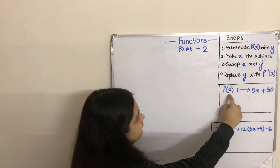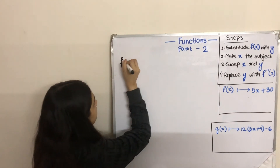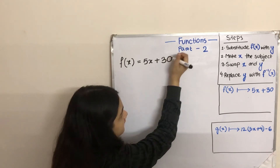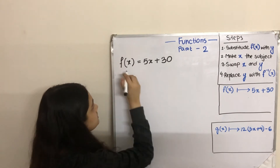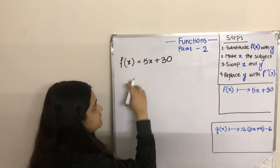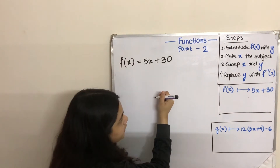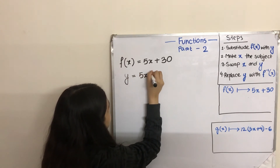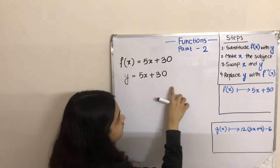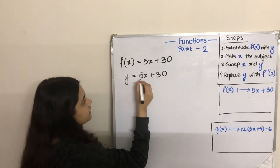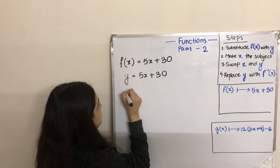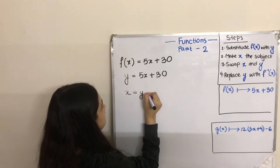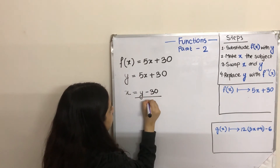Number 1: f of x equals to 5x plus 30. If we follow these 4 simple steps, it will be really easy for us to find the inverse. First step is to replace f of x with y, so y equals to 5x plus 30. Then we will make x the subject of the equation. To make x the subject, we will bring x to one side and everything else to the other, giving us y minus 30 divided by 5.